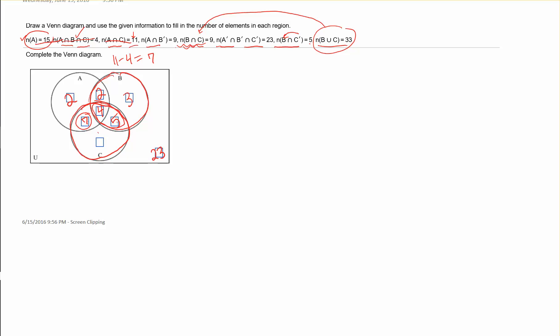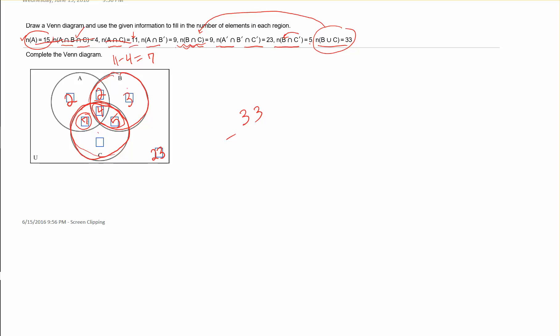Now the cardinality of B union C being 33 makes sense. I take 33 and subtract all the known pieces inside B and C: 3 plus 2 is 5, plus 5 is 10, plus 4 is 14, plus 5 is 19, plus 2 is 21. Subtracting 21 from 33 gives 12 as the missing piece in C, so that the union of B and C totals 33. That's how you approach this type of problem — piece by piece, understanding visually what intersections, complements, and unions mean in a Venn diagram.